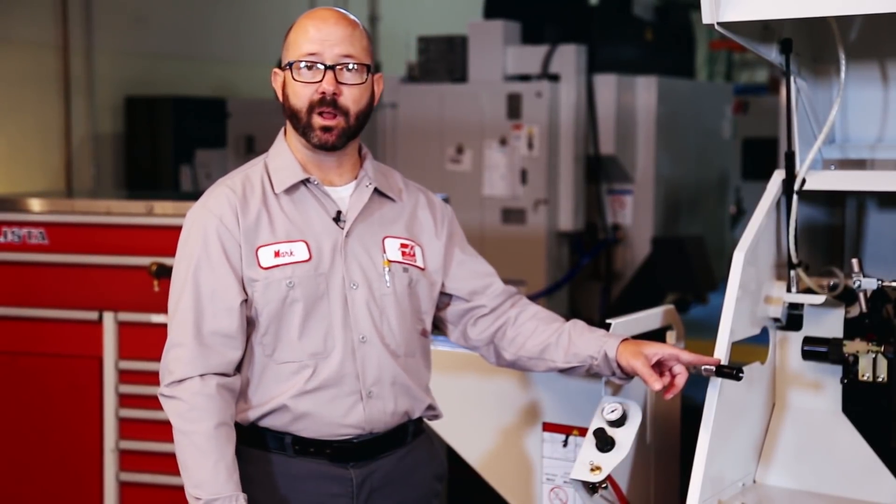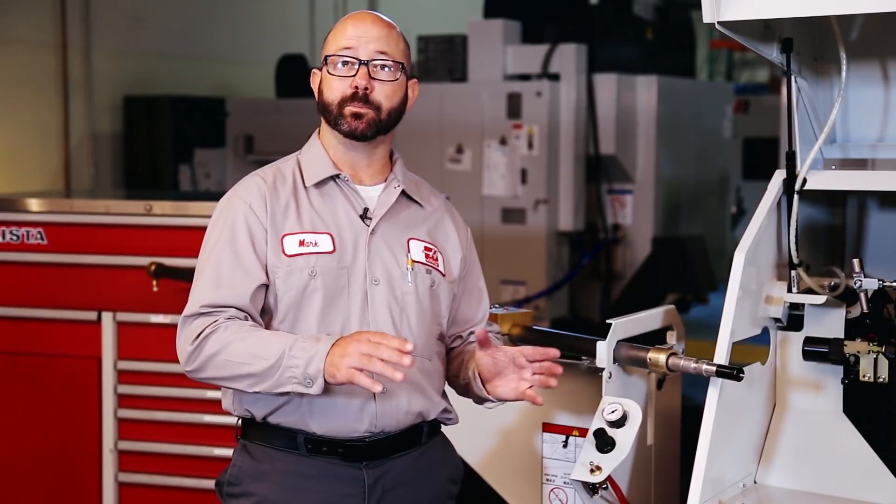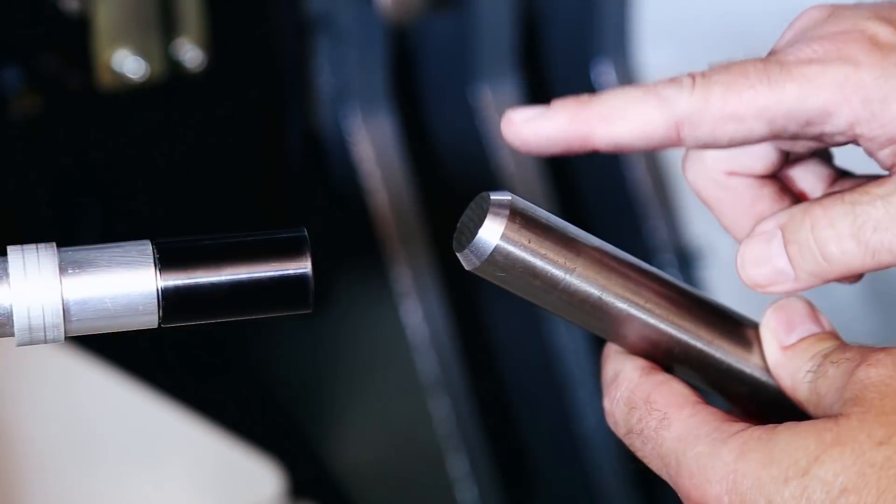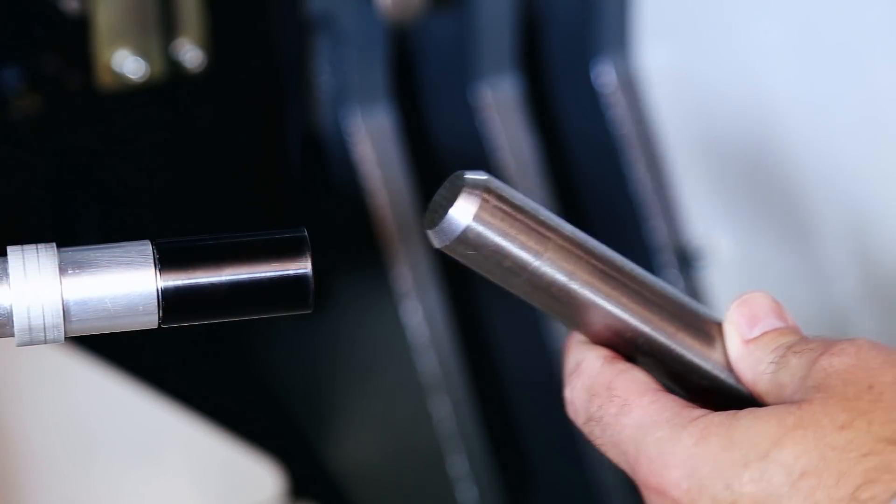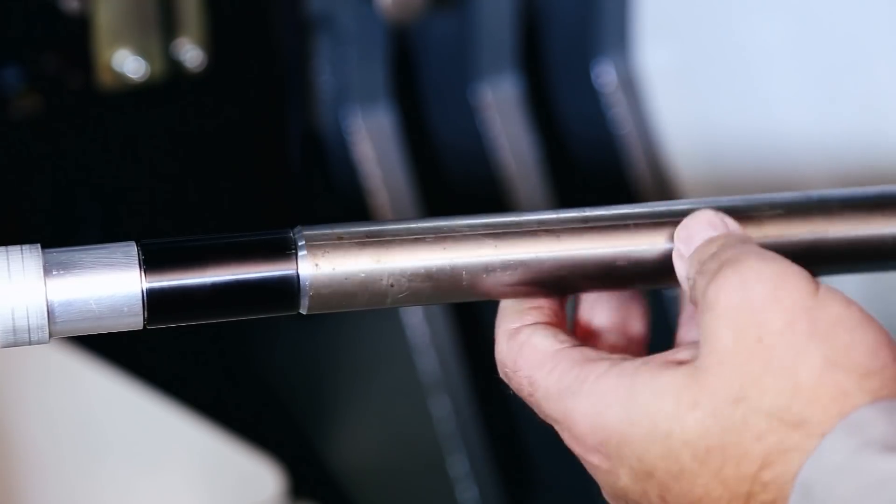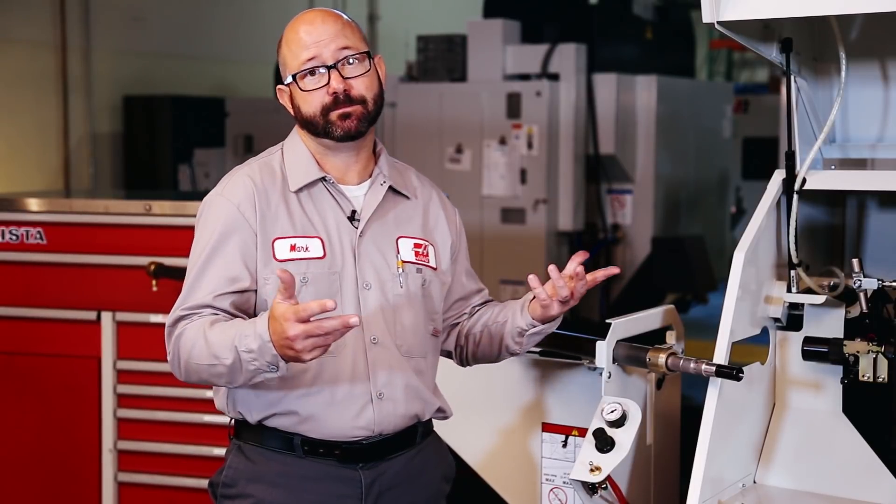If you're running bar stock that's larger diameter than the end of our push rod here, then you'll definitely want to put a 60 degree included chamfer on the end of that stock, which is going to help it center up. If you're running bar stock like I am that's smaller than our push rod, you don't really have to put a chamfer on there, but it's a good idea.